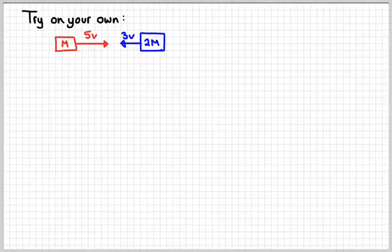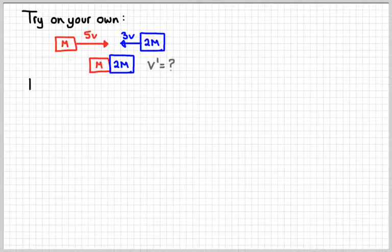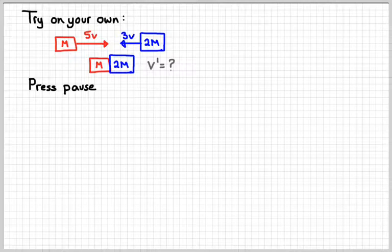So see if you can do this problem on your own. We've got two objects. One of mass m, the other of 2m. The red object moves to the right at 5v. The blue object moves to the left at 3v. Afterwards, they're going to stick together. And it's your job to see if you can figure out how fast they're going. So press pause. See if you can do that. And then press play again. Check for my solution.